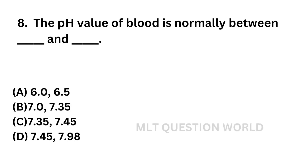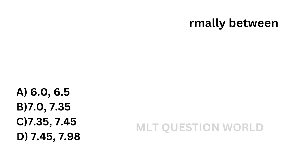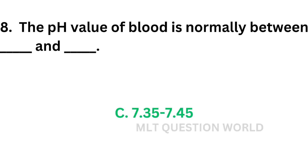Question number 8: The pH value of blood is normally between dash and dash. Option A: 6 to 6.5. Option B: 7 to 7.35. Option C: 7.35 to 7.45. Option D: 7.45 to 7.98. Normal pH of the blood is 7.4. In the options we have 7.35 to 7.45. The correct answer is option C: 7.35 to 7.45.